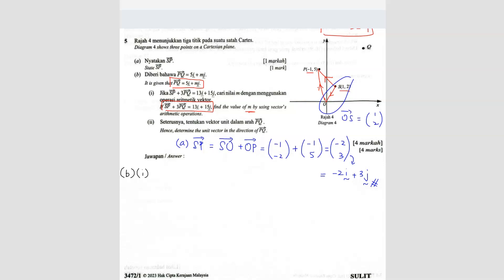So we can just copy back this equation. So the equation is SP plus 3PQ equals 13I plus 15J. So this is what's given. And SP, we have SP already here from question, the first one. And we have PQ. PQ is also given here. So we just have to substitute.